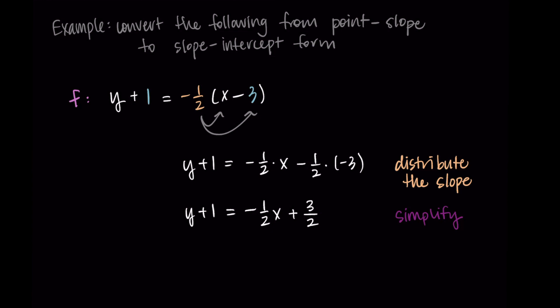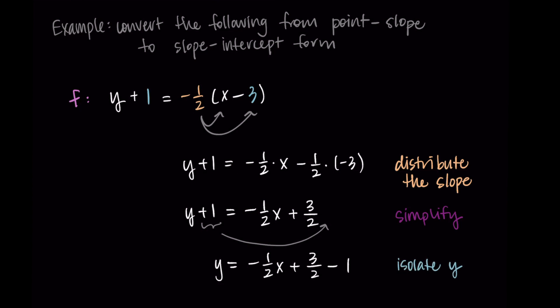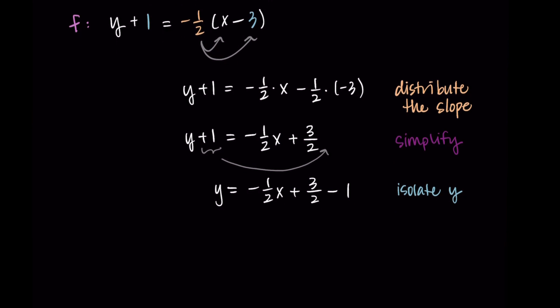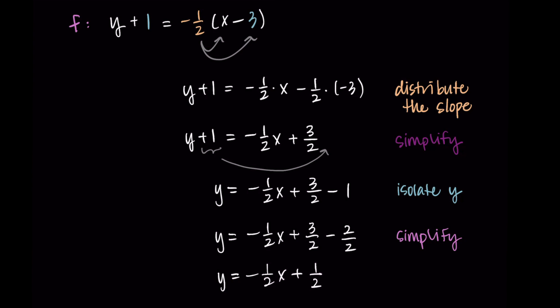Now I want to isolate y, since our final version is y equals mx plus b. I'll subtract 1 from the left by moving it to the right-hand side. So now I have y equals negative one-half x plus three-halves minus 1. I'll rewrite 1 as two-halves so I can combine the fractions. Three-halves minus two-halves is one-half. So my final answer is y equals negative one-half x plus one-half, which is now in slope-intercept form.